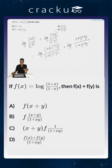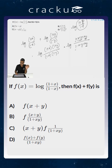Now we want to convert this to the form log of (1 + p) divided by (1 - p). What you notice is the numerator is (1 + xy + x + y) and the denominator is (1 + xy - x - y). Essentially, this is of the form log of (1 + xy + x + y) divided by (1 + xy - x - y).